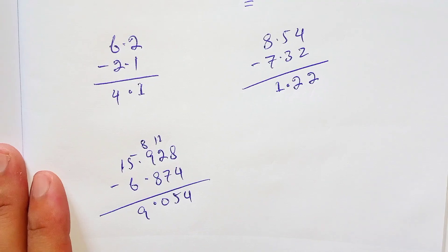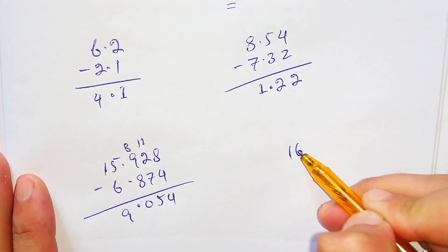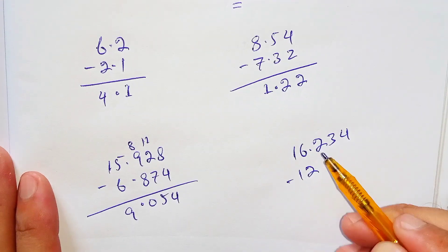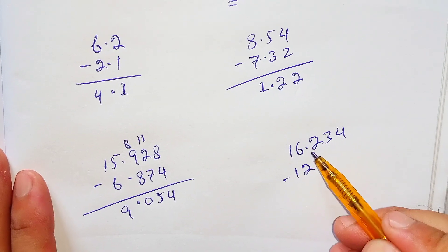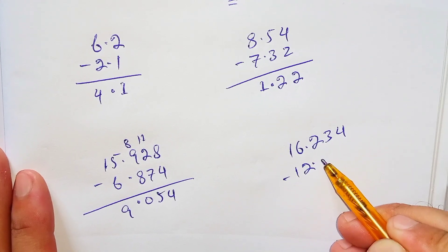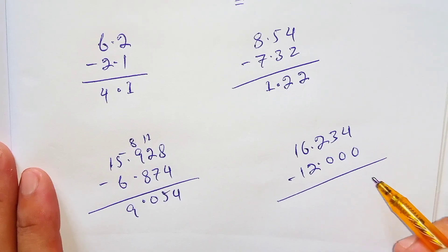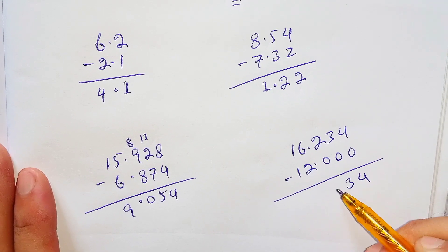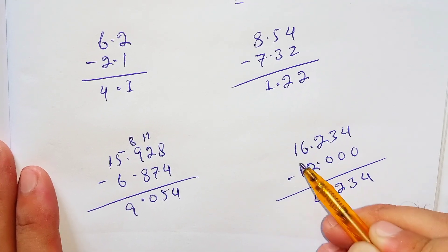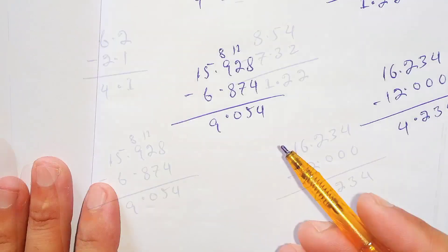Let's take another example in which we have to add zeros after the decimal point: 16.234 minus 12. We are subtracting a whole number from a decimal, so we place the decimal point to the right of the whole number and add zeros — writing 12 as 12.000. Then 4 minus 0 is 4, 3 minus 0 is 3, 2 minus 0 is 2. Bring down the decimal point, and 16 minus 12 is 4. So 16.234 minus 12 is equal to 4.234.